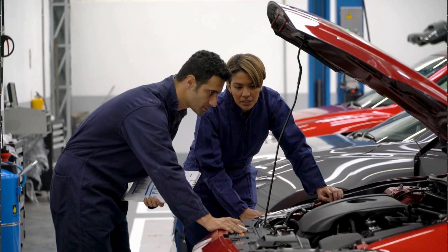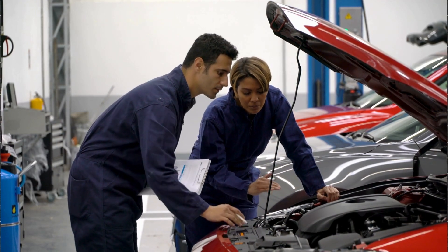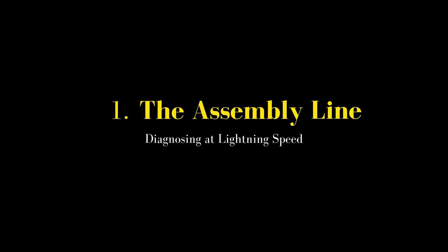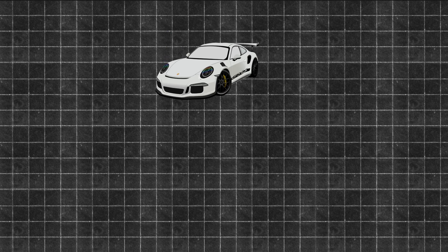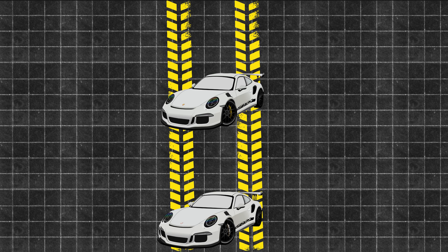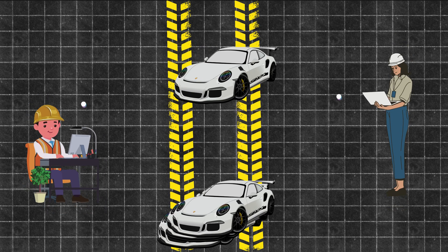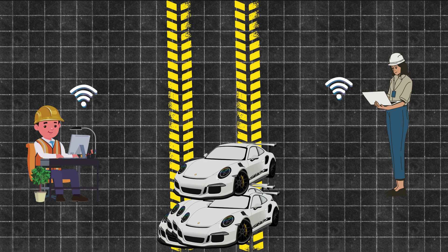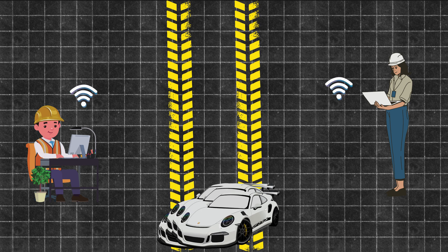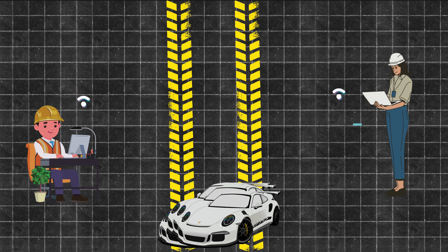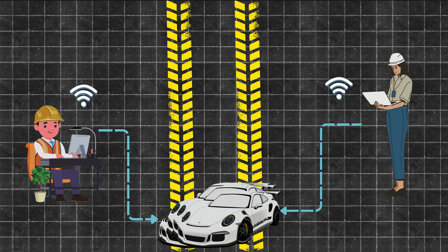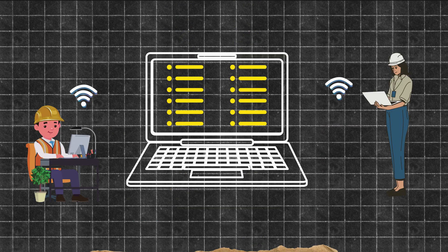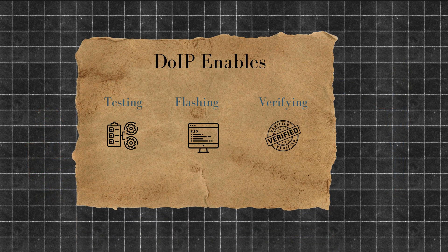Let's step out of theory and into the garage, the factory, and the cloud. Picture a line of freshly manufactured EVs rolling down a factory floor — no mechanics under the hood, just engineers holding laptops connected via Ethernet, running diagnostics at 1 Gbps. They're not checking tyre pressure manually; they're reading fault codes from 40-plus ECUs in seconds. That's DOIP at work — testing, flashing, and verifying each car before it even touches the road.